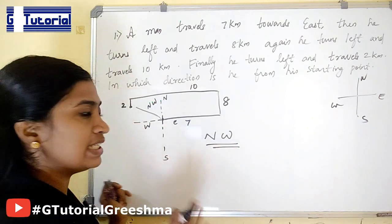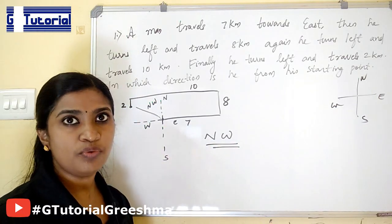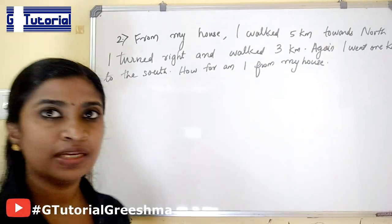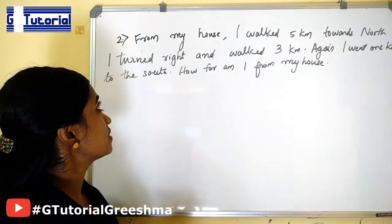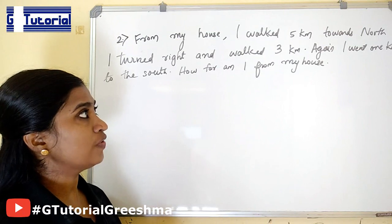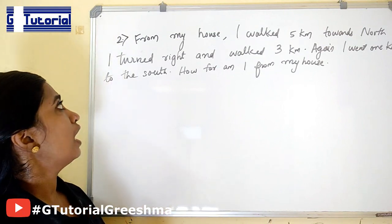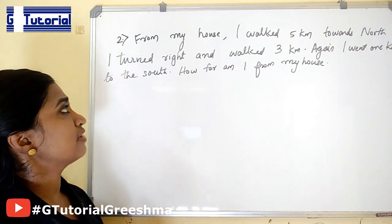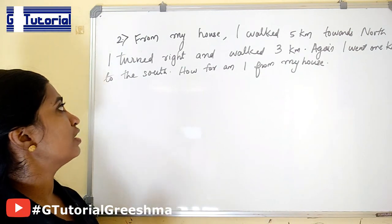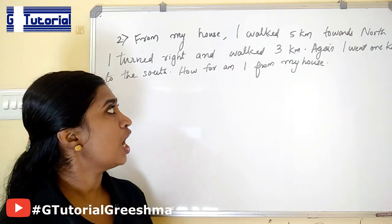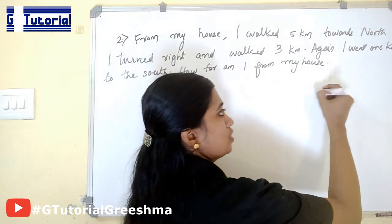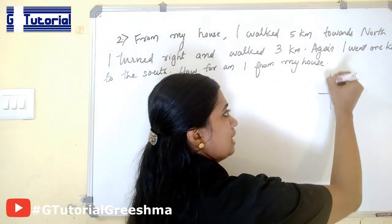Now we can see the second type of question. From my house I walked 5 km towards north. I turned right and walked 3 km. Again I went 1 km to the south. How far am I from my house? This is the basic setup.